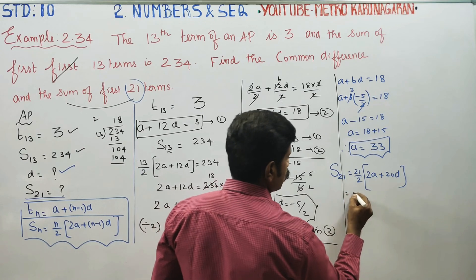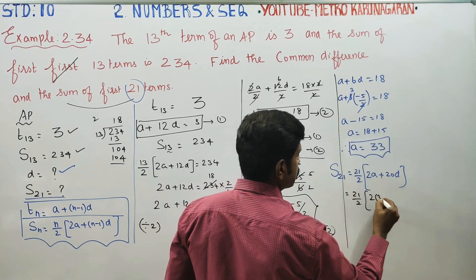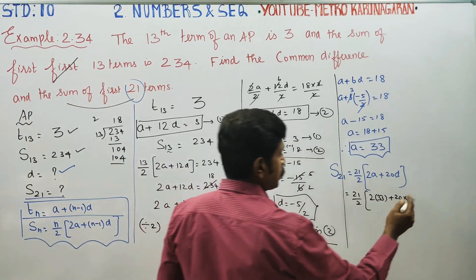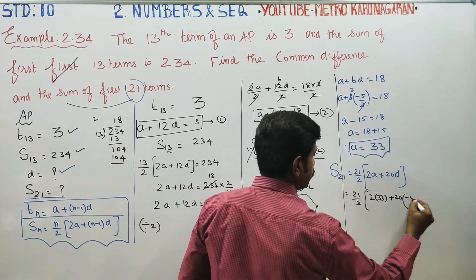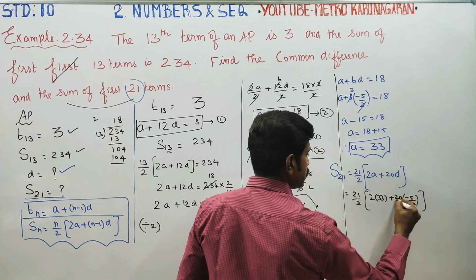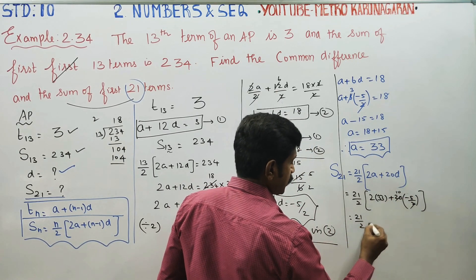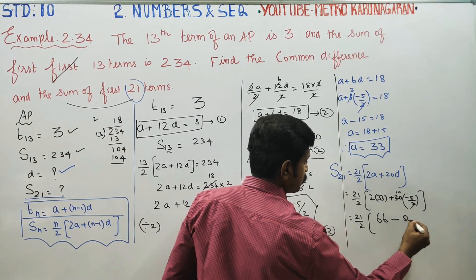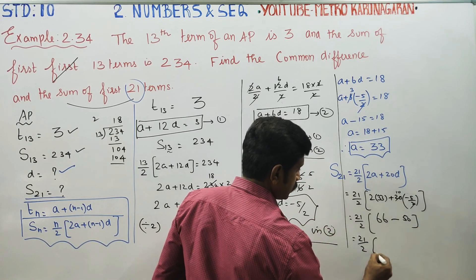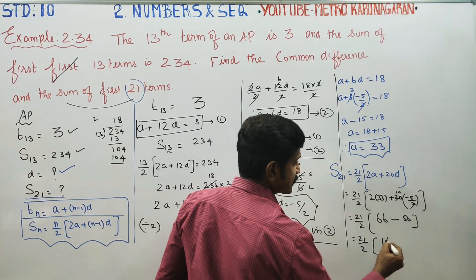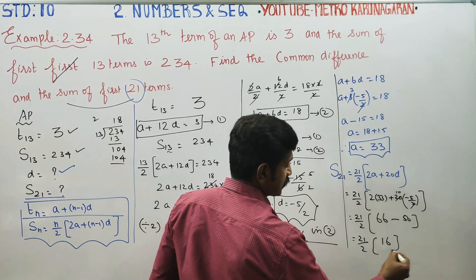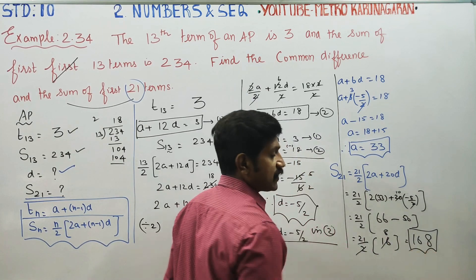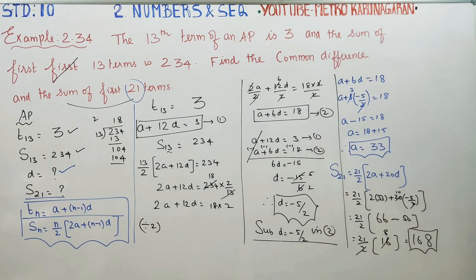21 by 2 times (2 times 33 plus 20 times minus 5 by 2). This equals 21 by 2 times (66 minus 50). 66 minus 50 equals 16. Cancel: 21 times 8 equals 168. Therefore your answer is 168. Thank you.